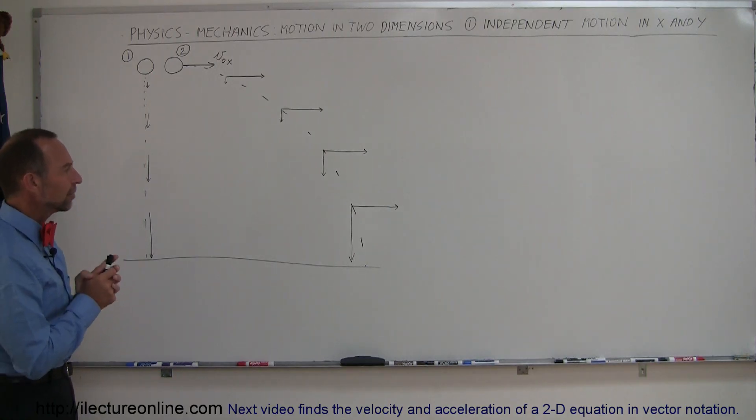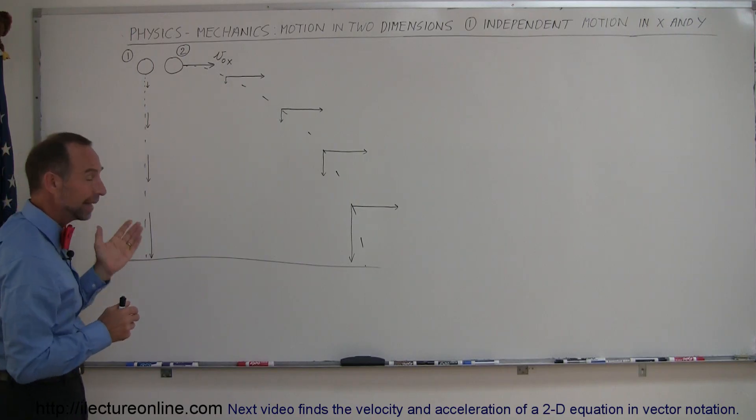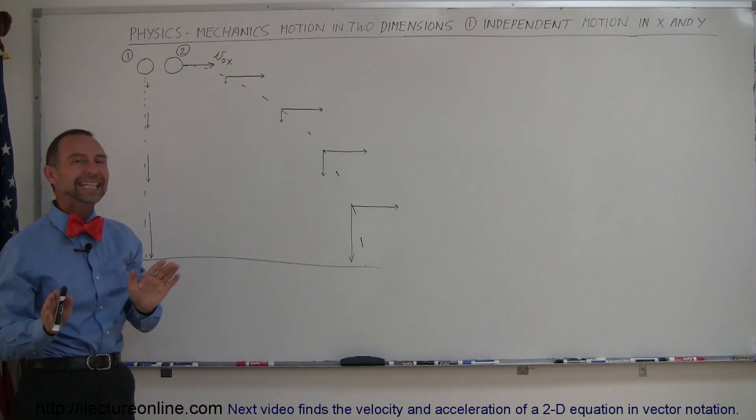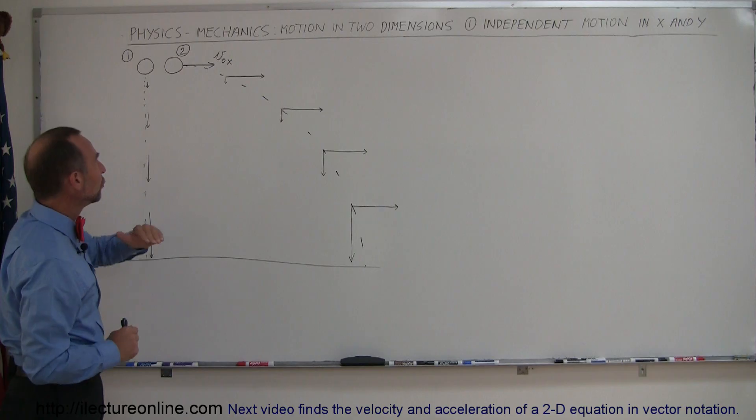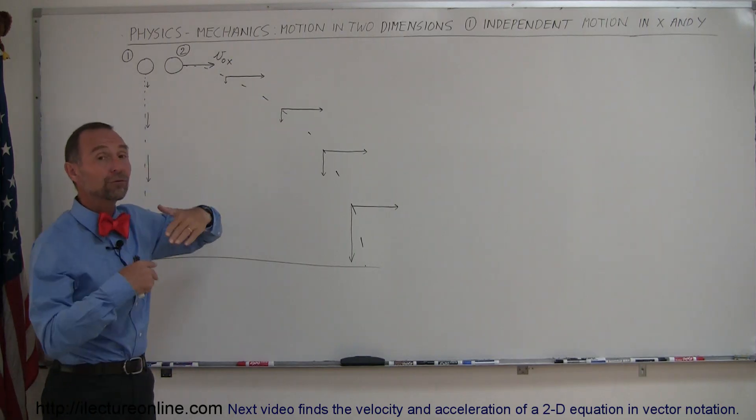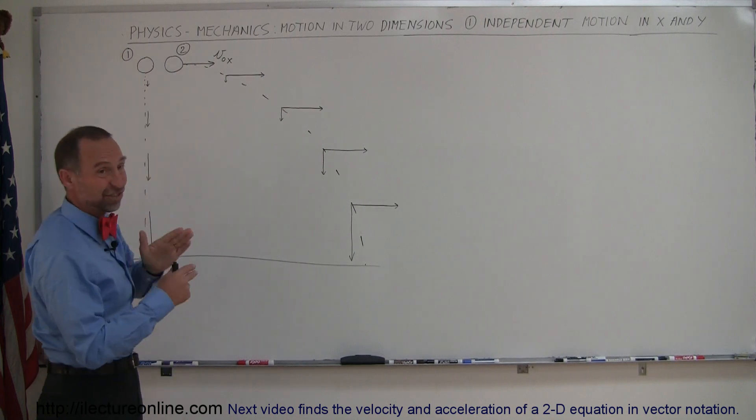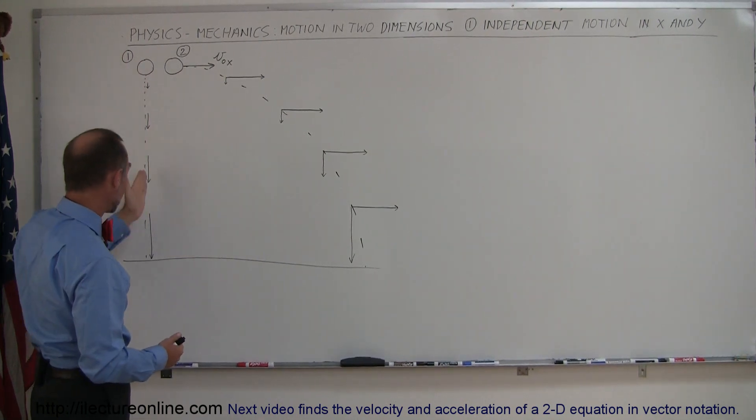And the reason why they hit the ground at the very same time is because the motion in the x direction and the motion in the y direction, so the horizontal motion of the ball and the vertical motion of the ball are completely independent of one another. Notice in the horizontal direction there's no force exactly on the balls, so this ball will stay stationary in the x direction, simply fall down in the y direction.